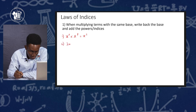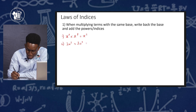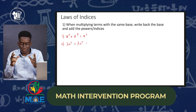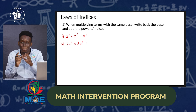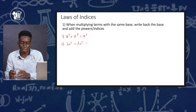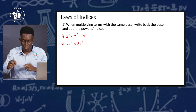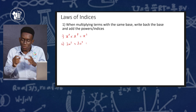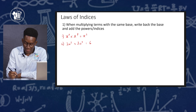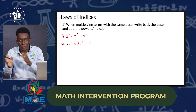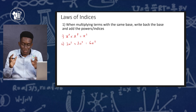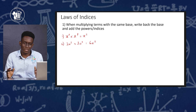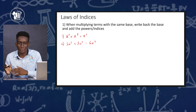The second example: 2a raised to the third power multiplied by 3a raised to the second power. When we have terms with coefficients, we multiply those coefficients first — we multiply the numbers first. So 2 times 3 gives you 6. And then a to the third and a to the second — the bases are the same, so we put back the base and add the powers: 3 plus 2 gives you 5. When multiplying, ensure we multiply the numbers first and then the variables.